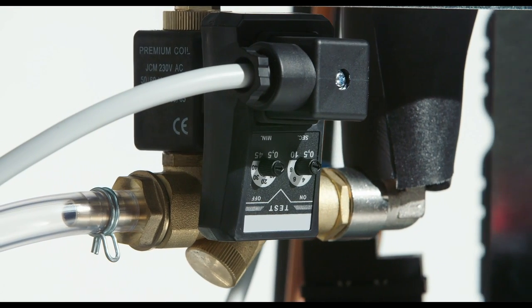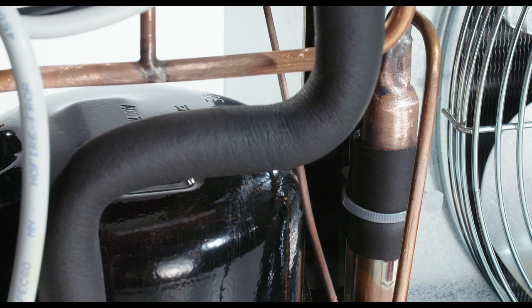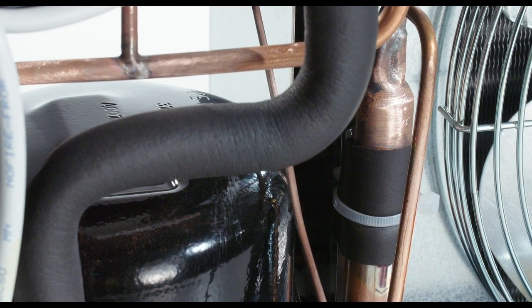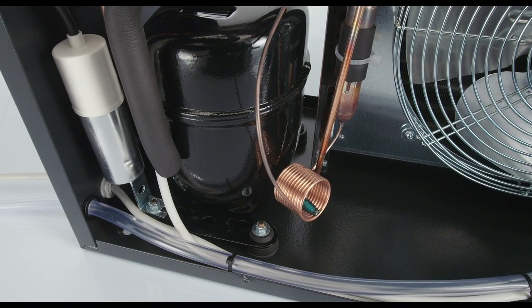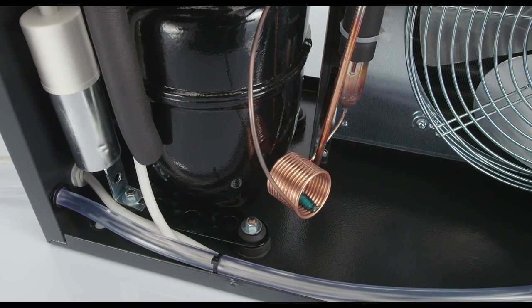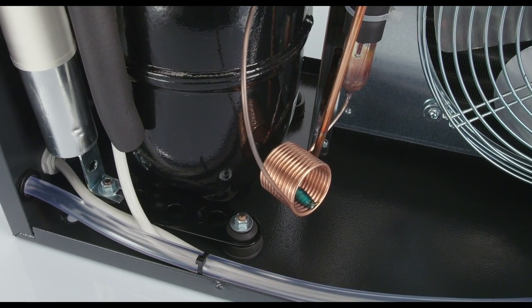The timer drain ensures a proper drain of the condensate. The refrigerant filter protects the capillary tube from possible dirty particles. The capillary tube reduces the pressure and temperature of the refrigerant. In that way, it improves the cooling process.